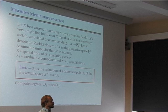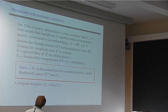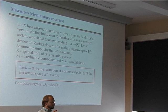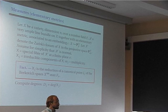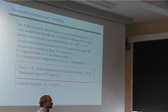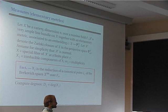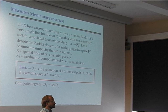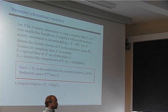I first show what happens when the variety, line bundle, and metric are elementary: the variety is embedded in projective space, the line bundle is O(1), and the metric is the usual Weil metric from the embedding. What I can do is take the Zariski closure of X in projective space over the integers, getting an integral model of X. Assuming the model is normal (not a serious assumption), I look at the special fiber of this model.